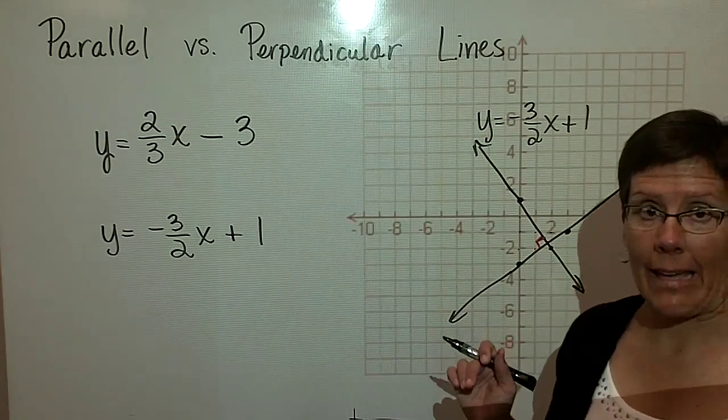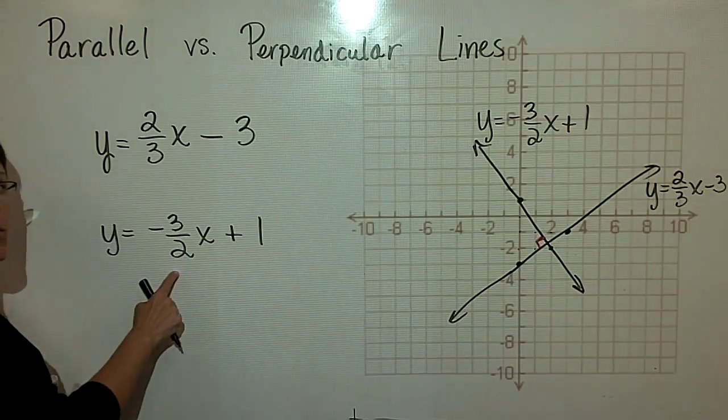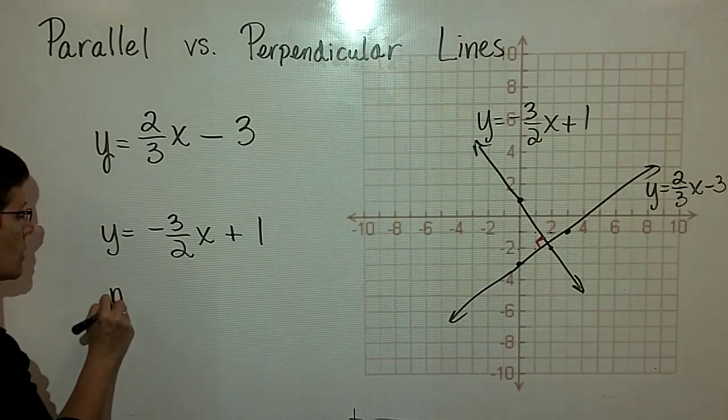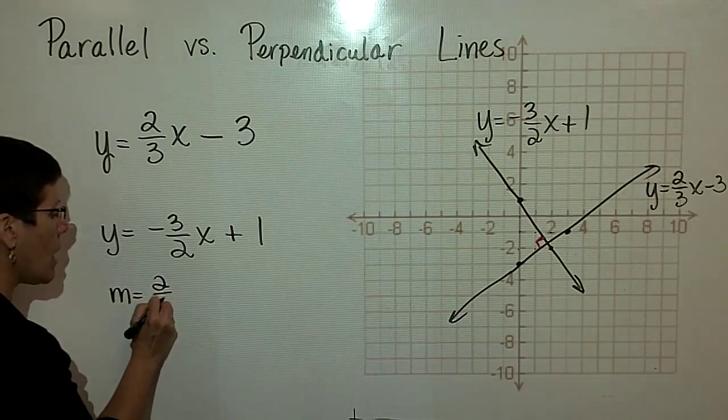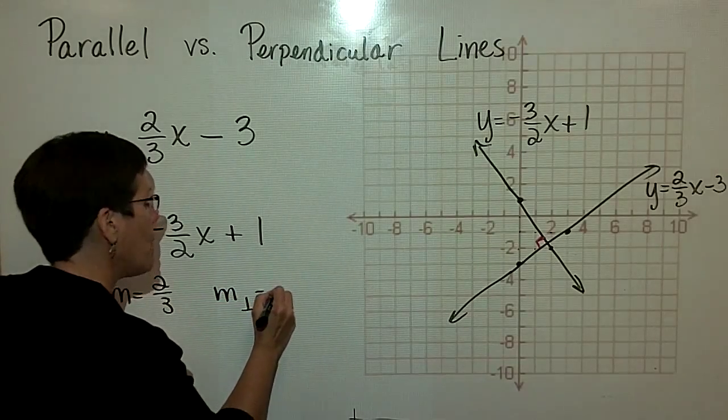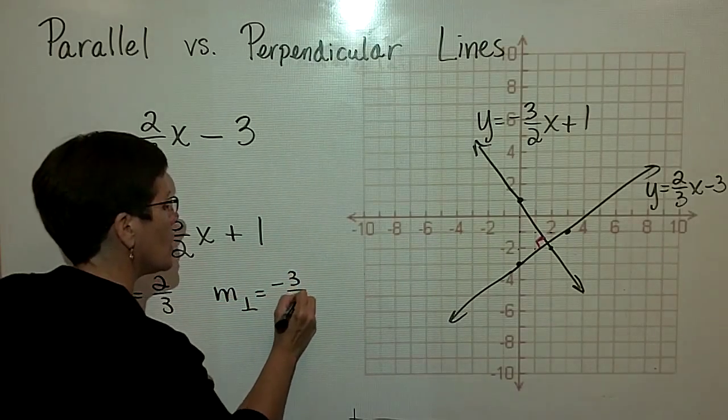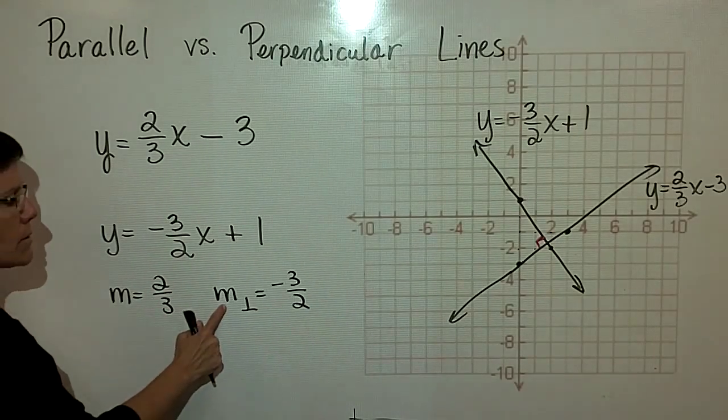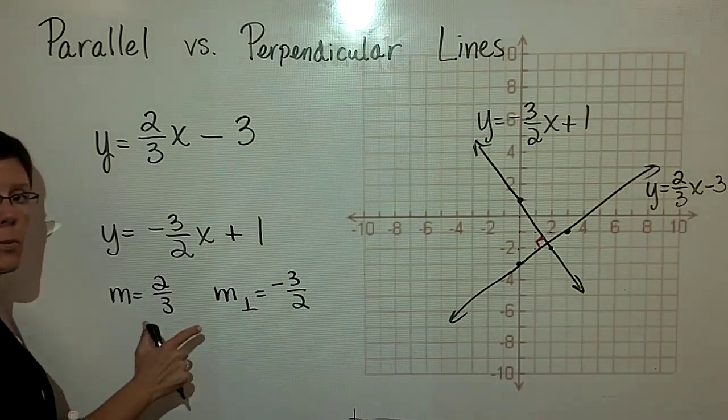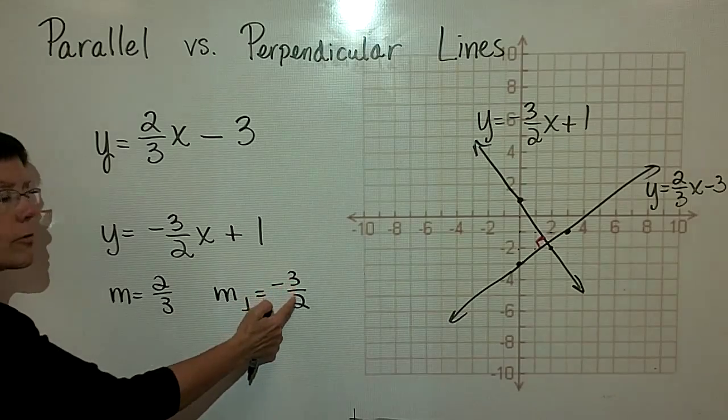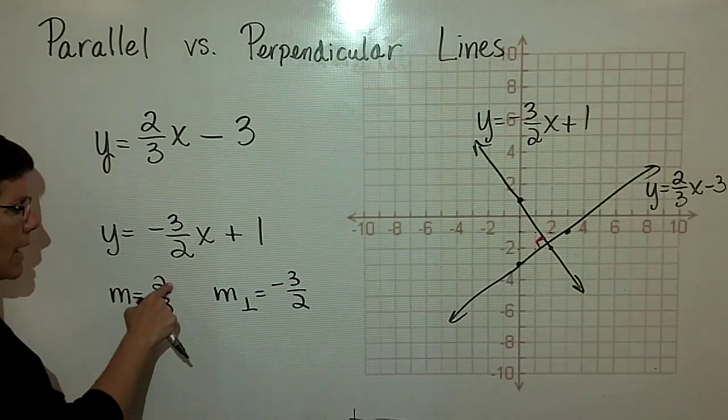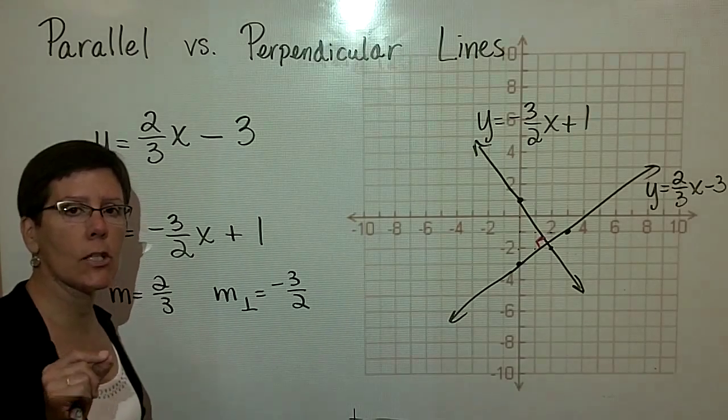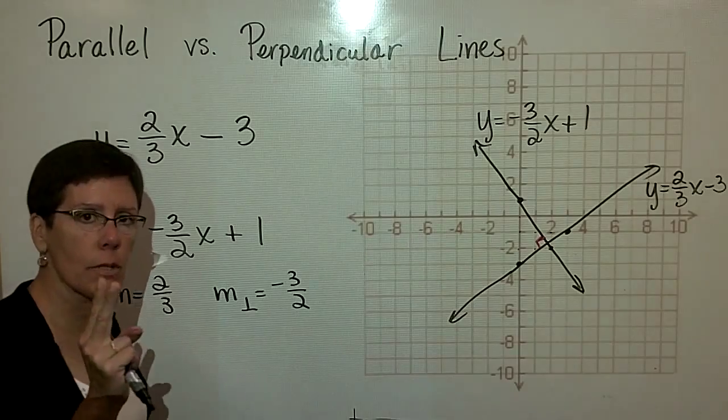And what we're going to notice then is that the slopes of two lines that are perpendicular to one another, their slopes are the opposite reciprocal. The slope of this line is 2 thirds. The slope of the line that is perpendicular to it is negative 3 over 2. Please look at this: 2 over 3, 3 over 2. This one's positive, this one's negative. So that's one way you can find if two lines are perpendicular is if their slopes are the opposite reciprocal.